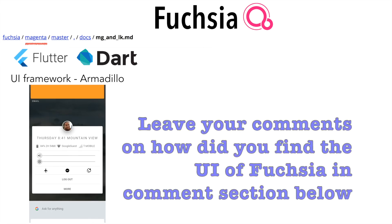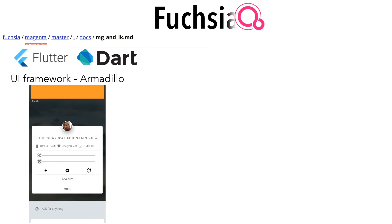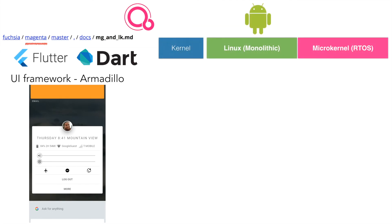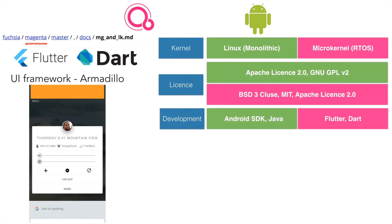With all this going on, there will be a natural comparison with Google's popular mobile OS, Android. Android's kernel is Linux, but Fuchsia's is Magenta, and Android's kernel is not a real-time operating system. The licensing of both is different, and then the very next obvious difference is the SDK and the programming language.